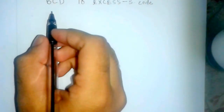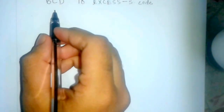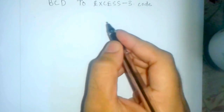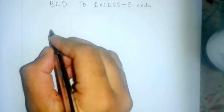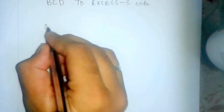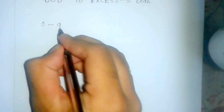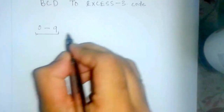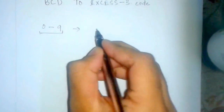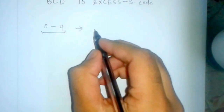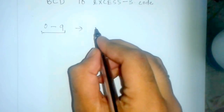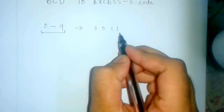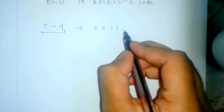This is a tutorial to convert a BCD number to an XS3 code. A BCD number can be any number from 0 to 9. For example, we can take 0011 — the BCD number equivalent is 3 — and convert it to XS3 code.